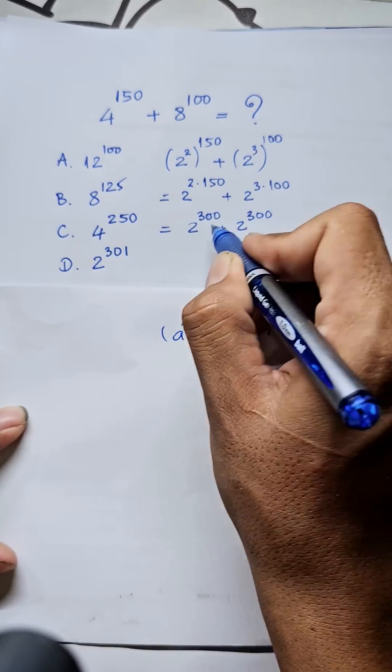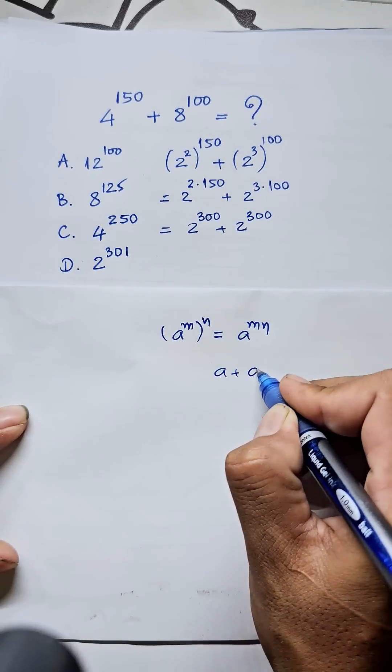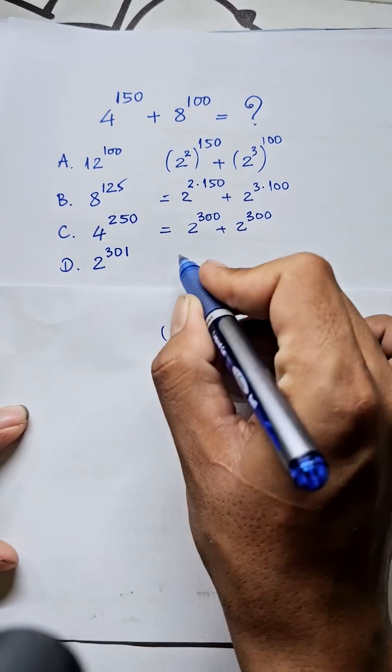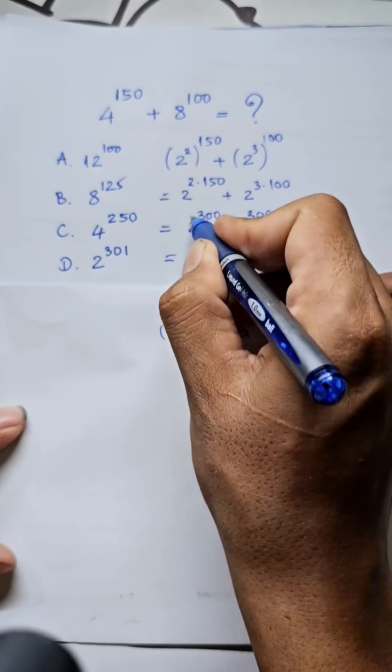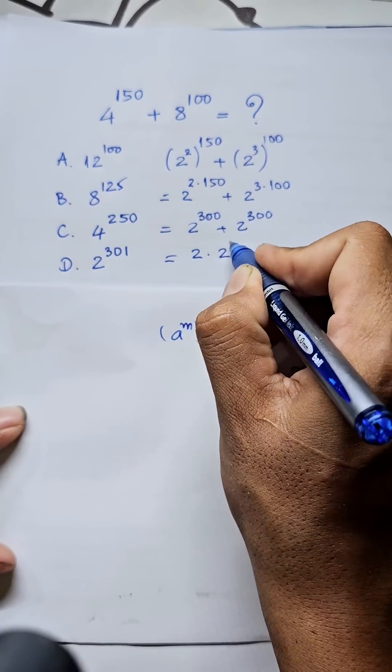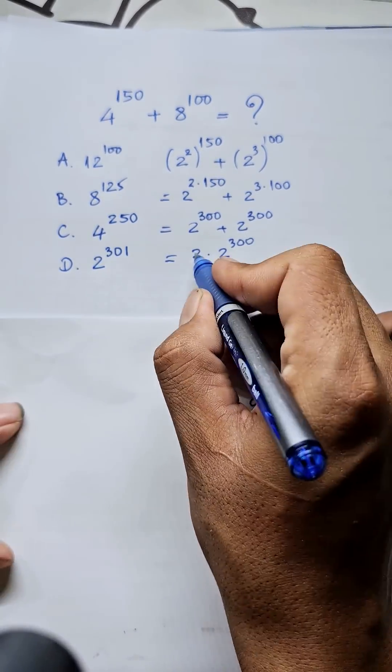Look, they're the same. So if a plus a equals 2a, here we get 2 times 2^300.